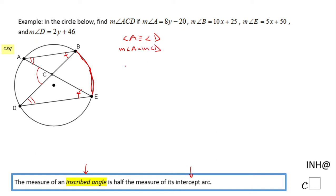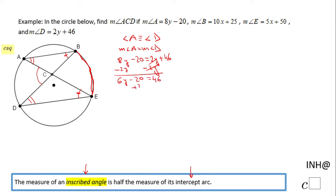Since angle A equals angle D, we set 8y minus 20 equal to 2y plus 46. Subtracting 2y from both sides gives 6y minus 20 equals 46. Adding 20 to both sides gives 6y equals 66, and dividing by 6 gives y equals 11.